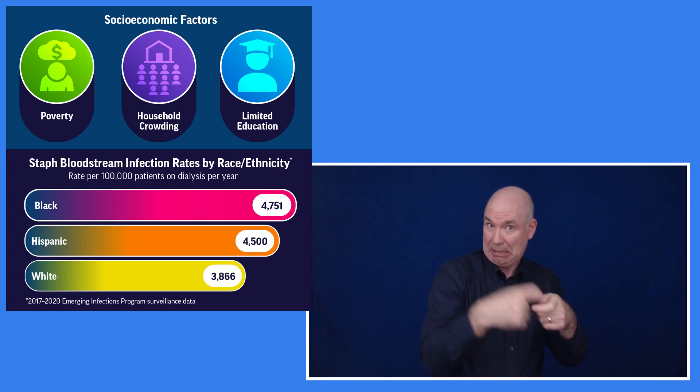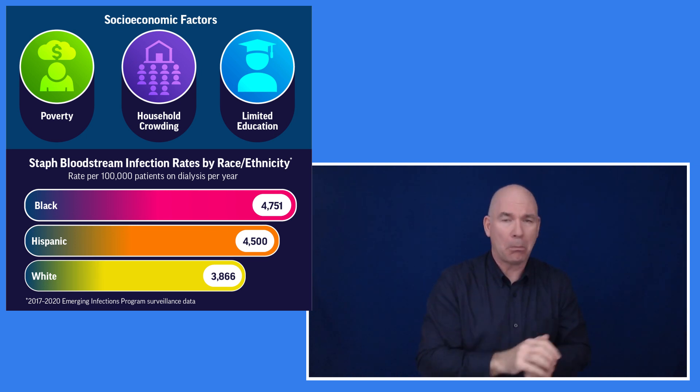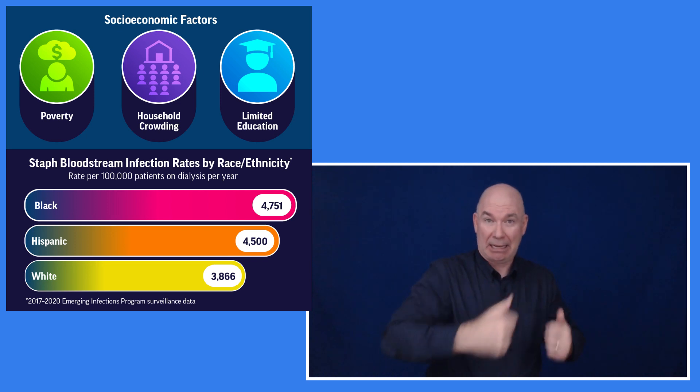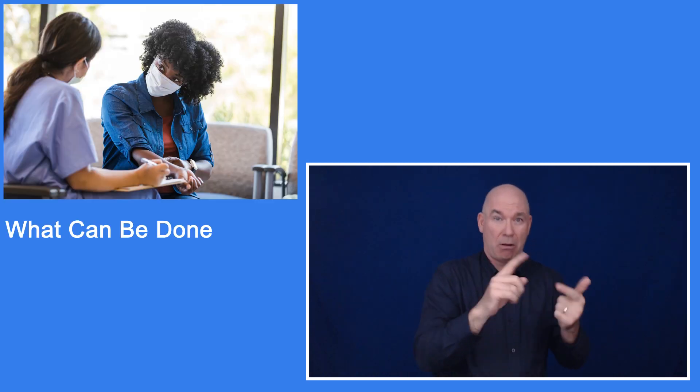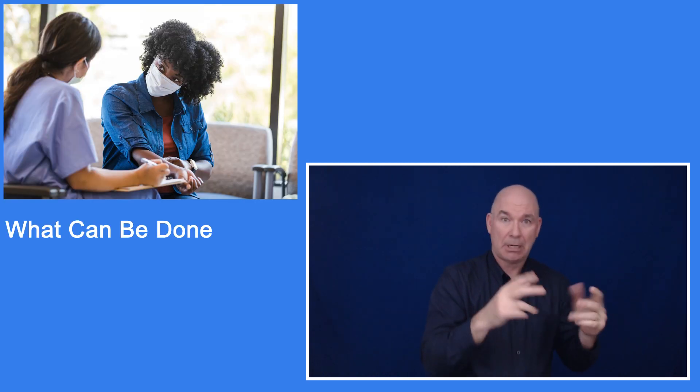Other factors besides race and ethnicity may be involved. There are more staph bloodstream infections in areas of the U.S. with higher poverty, more household crowding, and lower education levels. What can be done?